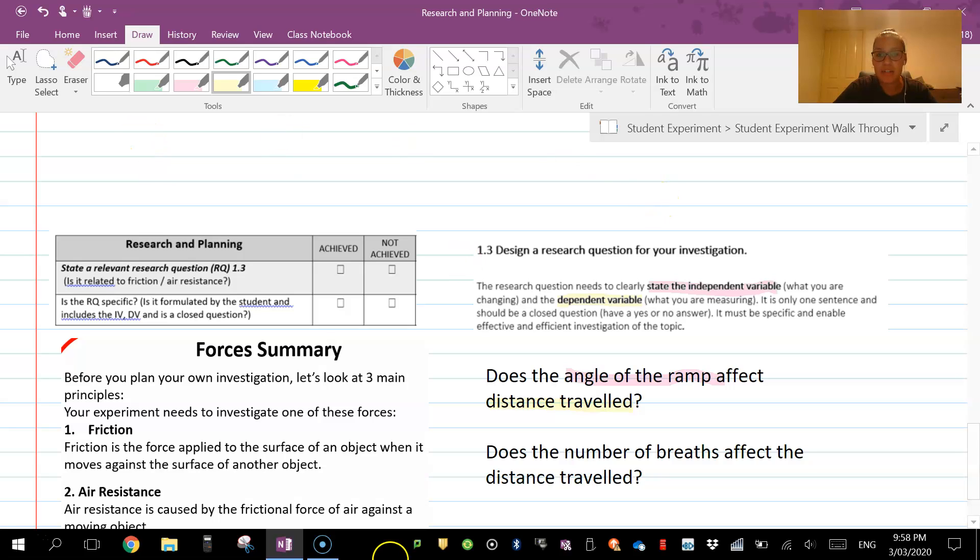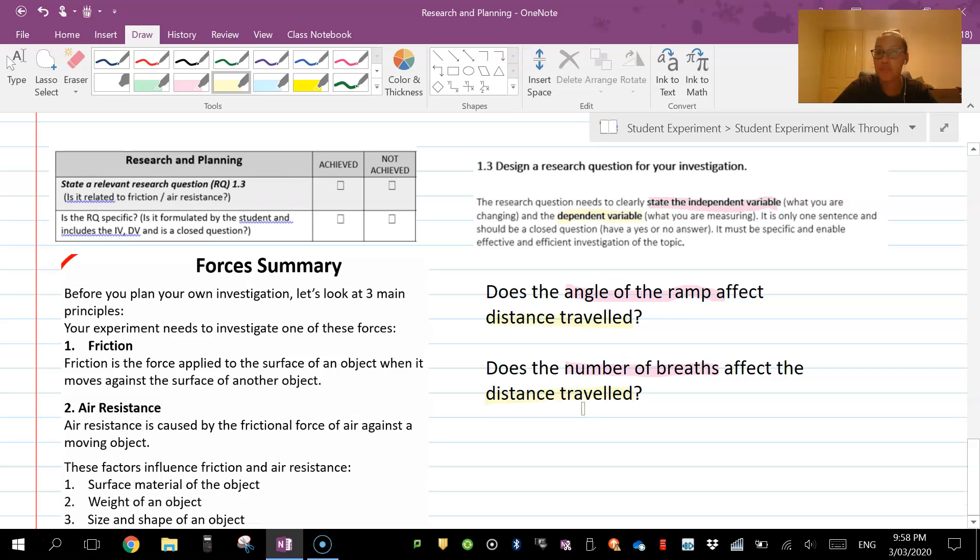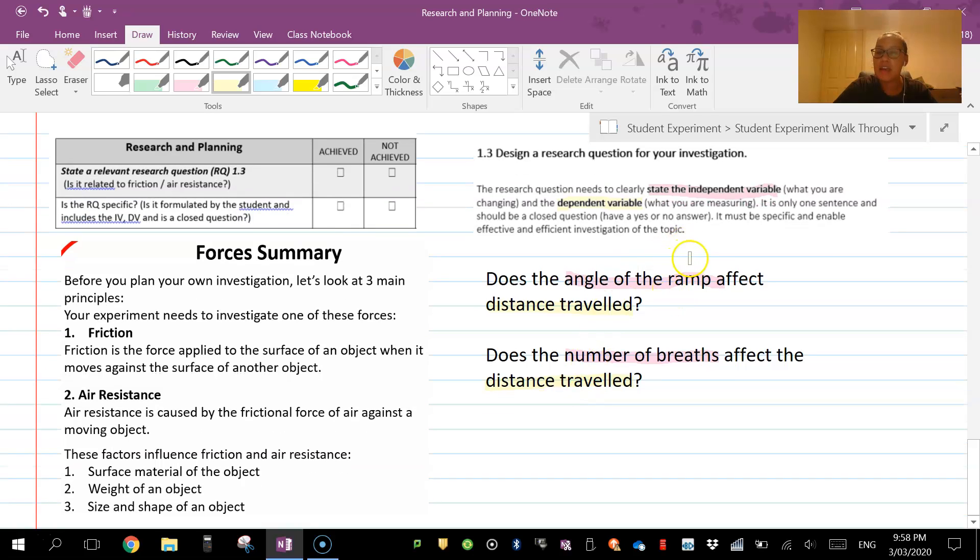The other one is does the number of breaths—that's the thing that we changed each experiment—affect the distance traveled, that's the thing that we measured each experiment. See how I'm linking the colors up, making sure that my research question has a very clear independent and dependent variable stated appropriately. Remember, the independent is going to affect the dependent; it is an action.